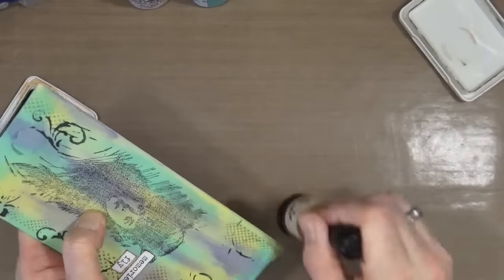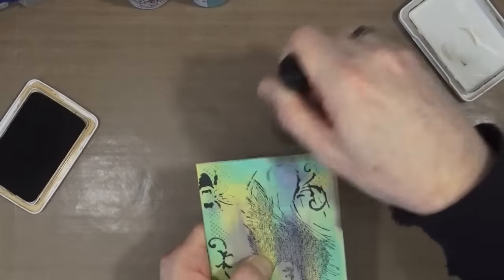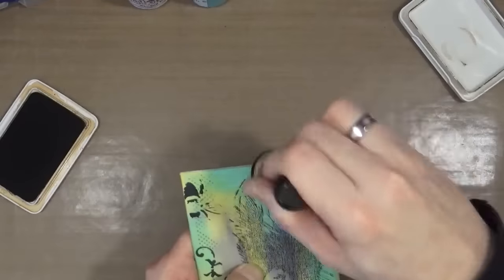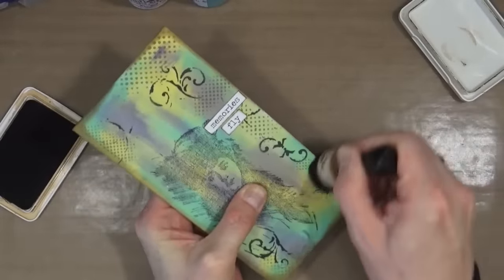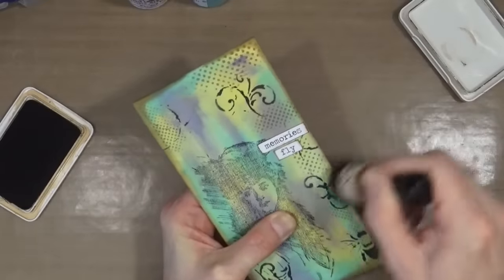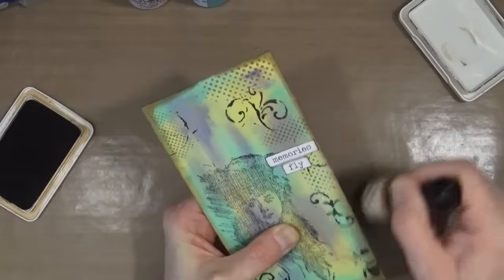As you can see, I'm just going around the outside borders of the canvas with that archival ink, just grunging up the outside border of it, just to try and age it a little bit. I'm just adding a little bit more texture to it, a little bit more of an aged effect.